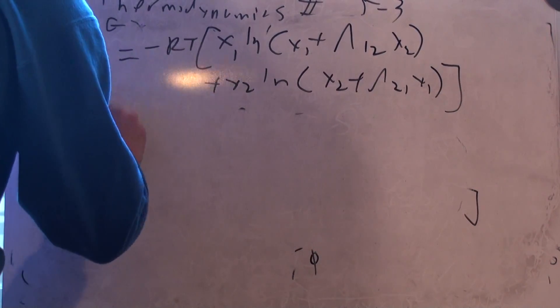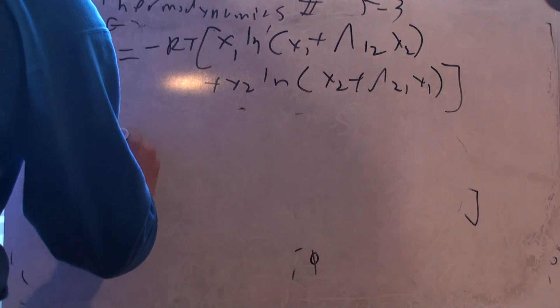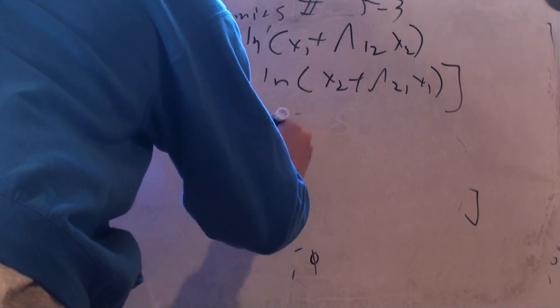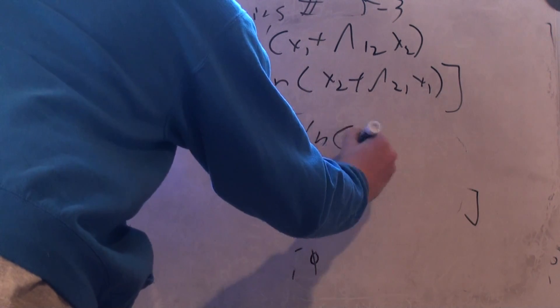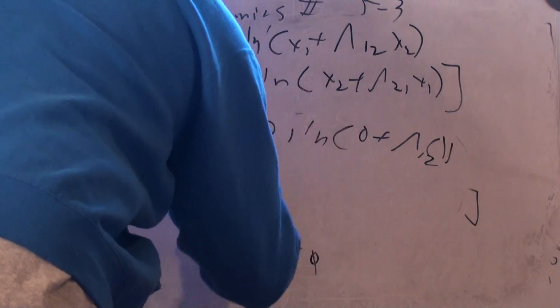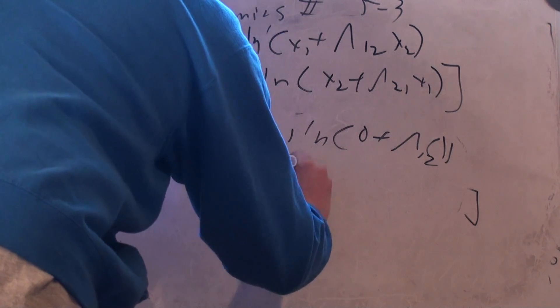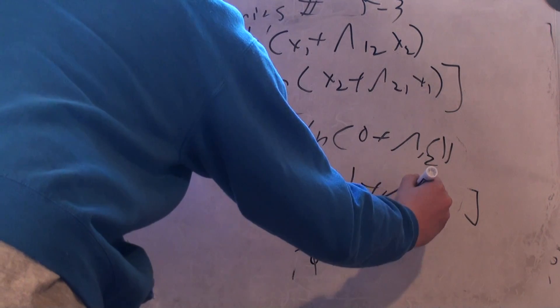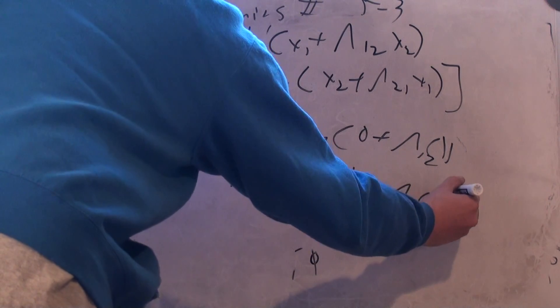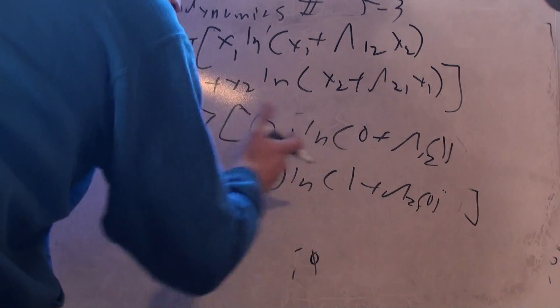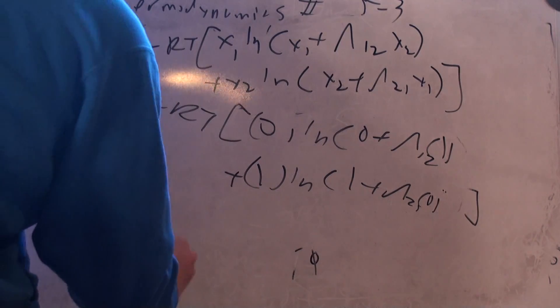As GE goes to X2 goes to 1, as a result X1 goes to 0, which equals minus RT. I've got 0 times natural log of 0 plus lambda 1,2 times 1, plus 1 times natural log of 1 plus lambda 2,1 times 0. And again, that's 0, and that's 1 times natural log of 1, which is also 0, which means it's equal to 0 also for the same math as before.